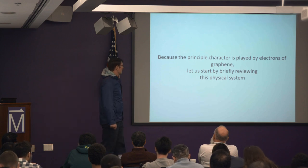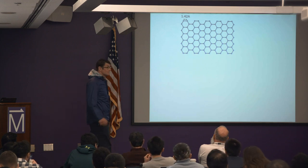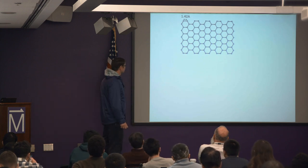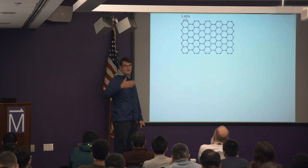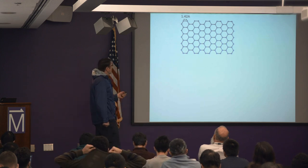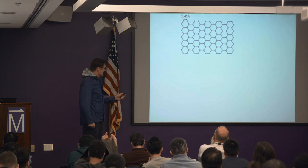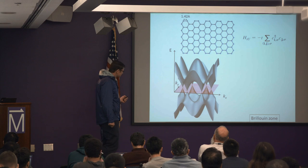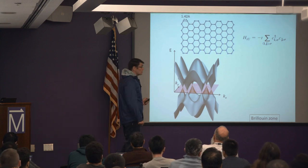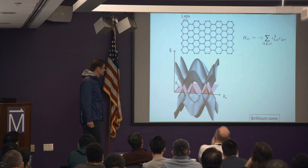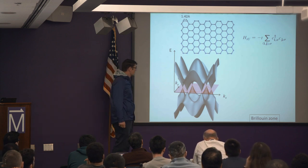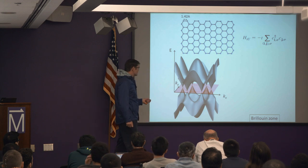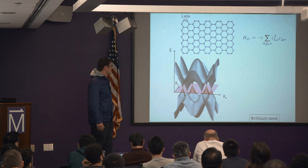Imagine a monolayer graphene approximated as a perfectly flat layer of carbon atoms with inter-atom distance about 1.42 ångströms. The π electron sticking out of the board can hop around on this lattice. A simple tight-binding model with nearest-neighbor hopping gives a spectrum with two bands — because this is not a Bravais lattice, there are two sites per unit cell. These two bands touch at two inequivalent points in the Brillouin zone.